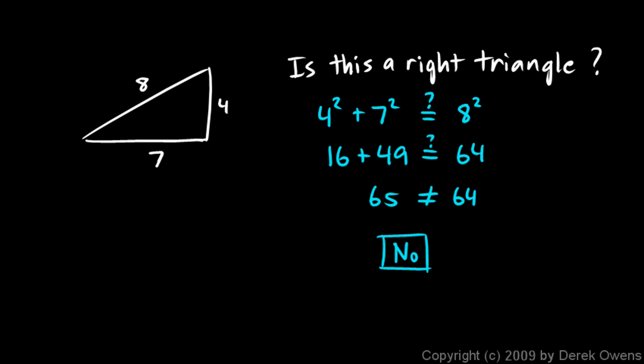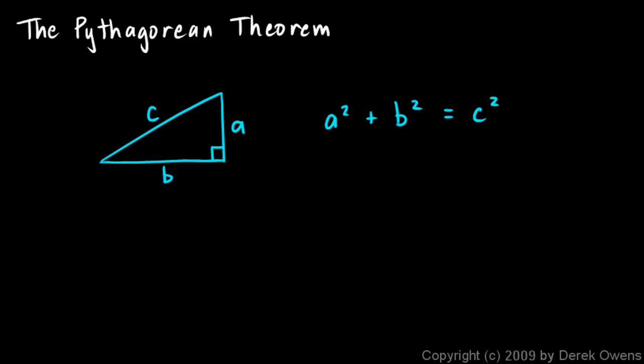Okay, so that's your introduction to the Pythagorean theorem. A squared plus B squared is C squared. It applies to any right triangle.